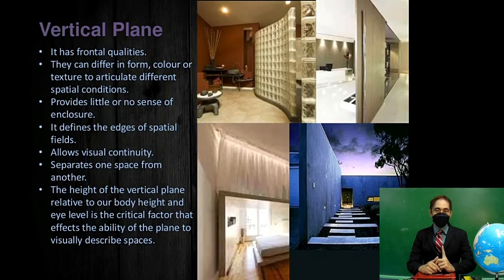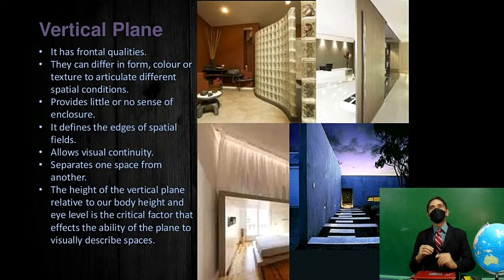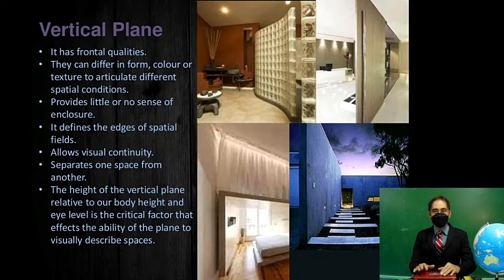The vertical plane has frontal qualities and can differ in form, color, or texture to articulate different spatial conditions. It provides little or no sense of enclosure on its own, defines the edges of spatial fields, allows visual continuity, and separates one space from another. The height of the vertical plane relative to our body height and eye level is the critical factor that affects the ability of the plane to visually describe spaces.